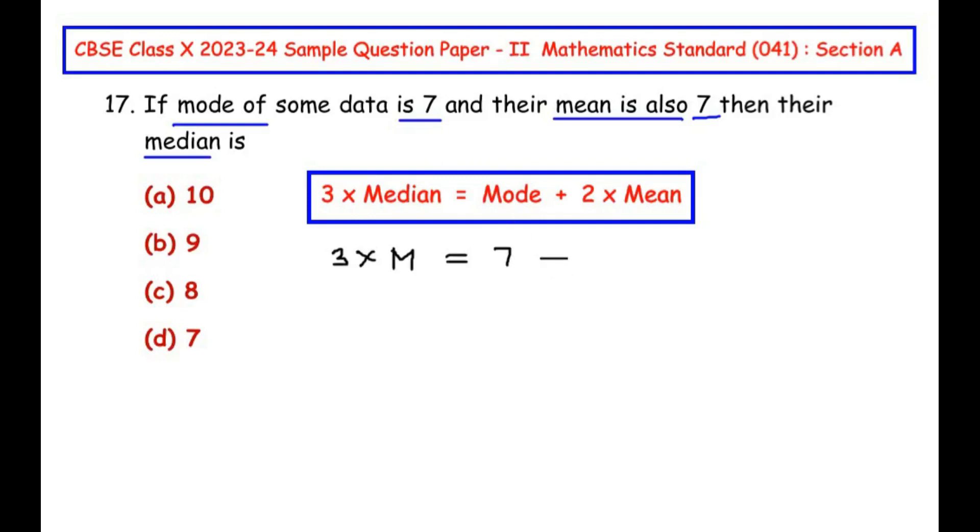Plus 2 times mean is also given as 7. Now 3 times M stays the same. Let us simplify the right hand side. So we have 7 plus 2 times 7 is 14. And 3 times M is equal to 7 plus 14 is 21.